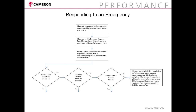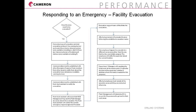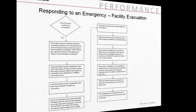Warning devices such as air horns, intercom system, or fire alarm pull stations can be used to facilitate this process. These devices are distributed throughout the facility. In Building F, the pull stations are located near the emergency exits. For Buildings A, G, and the Annex, the air horns are located in visible locations where they can be easily accessed.